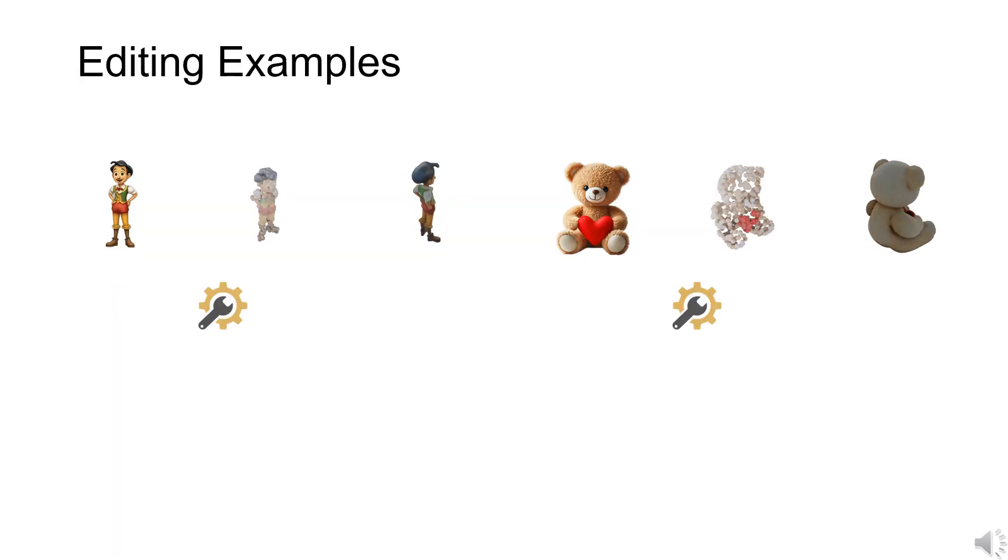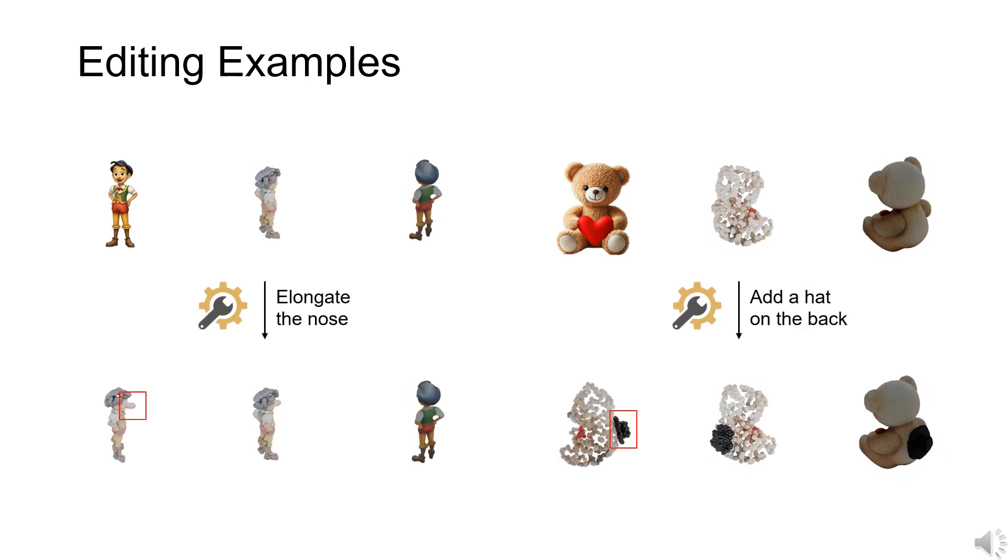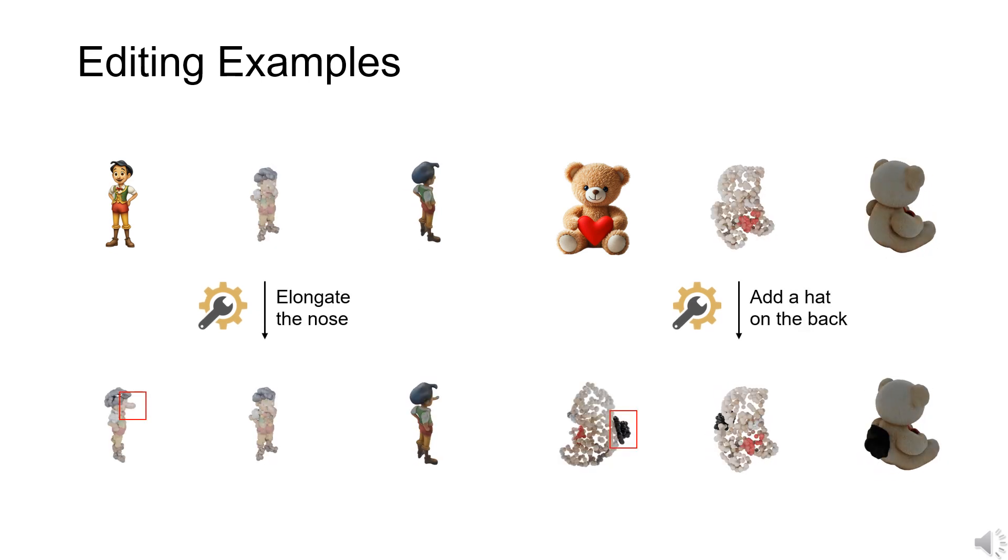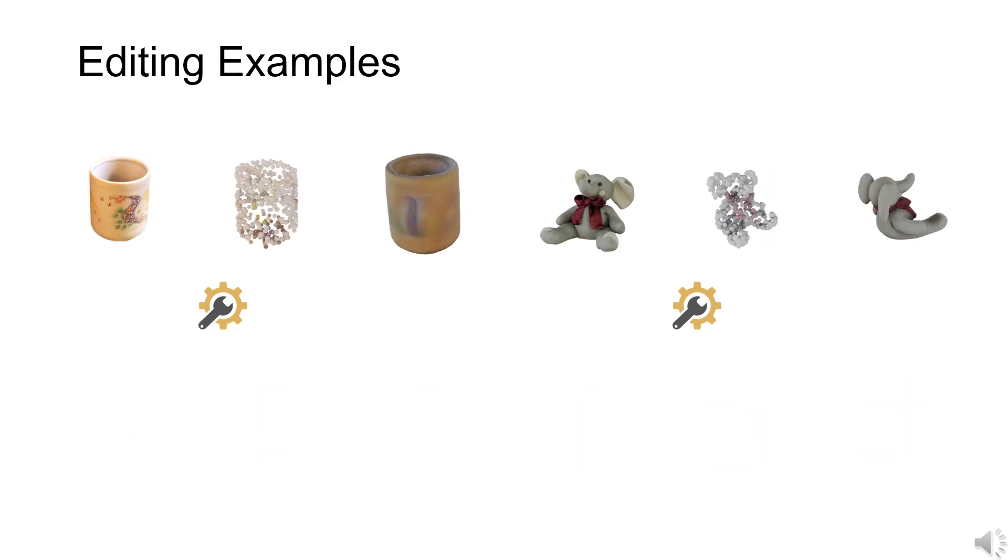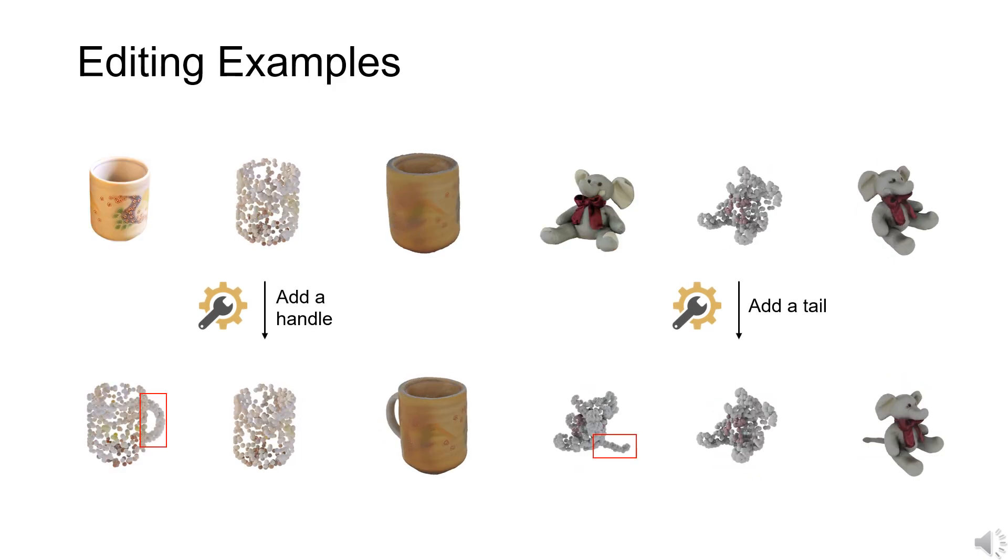Here we show editing examples with SPAR3D. In these two examples, we elongate the nose of Pinocchio and add a hat on the back of the teddy bear. We can also add a handle to a mug or a tail to an elephant doll.